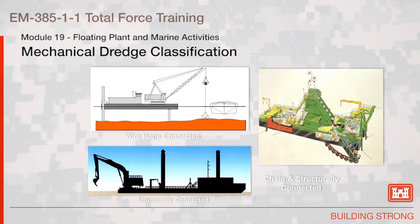Mechanical dredge classifications: mechanical dredges use some form of bucket to excavate and raise material from the channel bottom. Advantages include a minimum amount of water added to the sediment during dredging, and the dredging unit is not used to transport dredged materials, allowing uninterrupted dredging since other equipment handles transport. Disadvantages include a requirement for sufficient dredge cut thickness to fill the bucket efficiently, and inefficiency in fine-grained sediment, which washes out of the bucket as it is raised. The three standard classifications are structurally connected, wire rope connected, and chain and structurally connected.